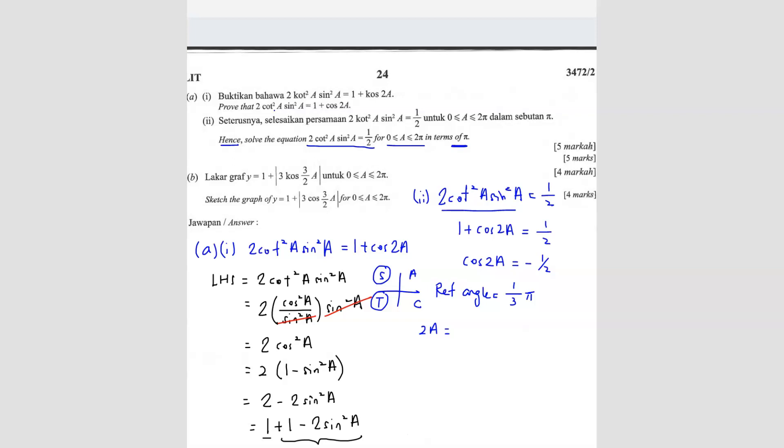So only part where it's negative for cos is 2nd and 3rd quadrant. So that means in the 2nd quadrant, you must take pi minus the reference angle, and in the 3rd quadrant, you must take pi plus the reference angle. So pi minus 1 over 3 pi, and the second one will be pi plus 1 over 3 pi.